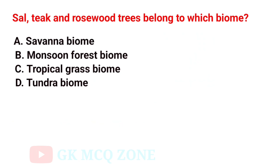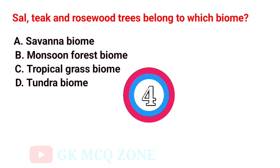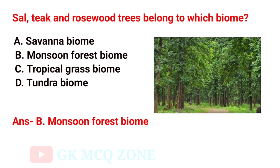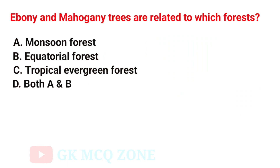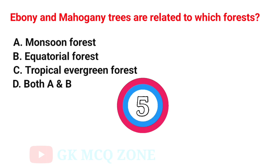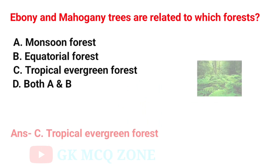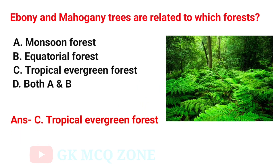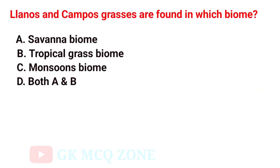Sal, teak, and rosewood trees belong to which biome? The correct answer is Option B: Monsoon Forest Biome. Ebony and mahogany trees are related to which forests? The correct answer is Option C: Tropical Evergreen Forest.